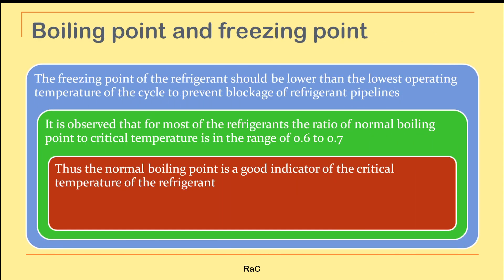The freezing point of the refrigerant should be lower than the lowest operating temperature of the cycle. For example, if the evaporator is meant to maintain minus 10°C, the freezing point of the refrigerant must be below that — otherwise the refrigerant will freeze, blocking the pipeline in the evaporator and stopping flow entirely.